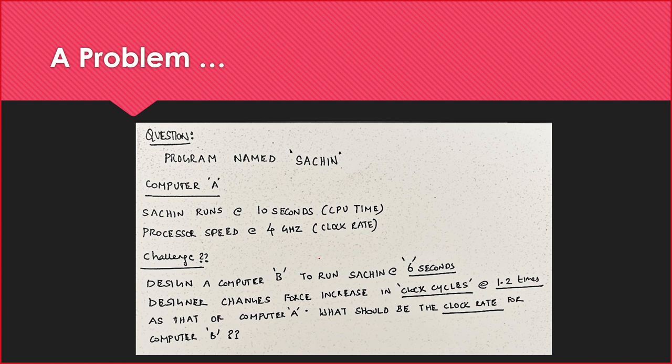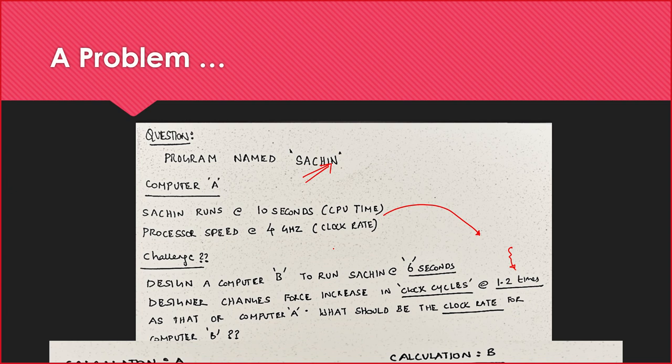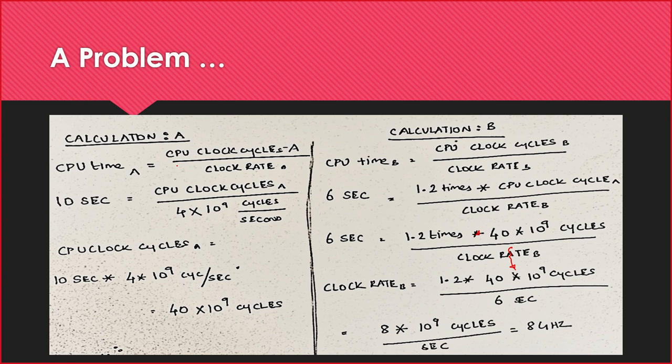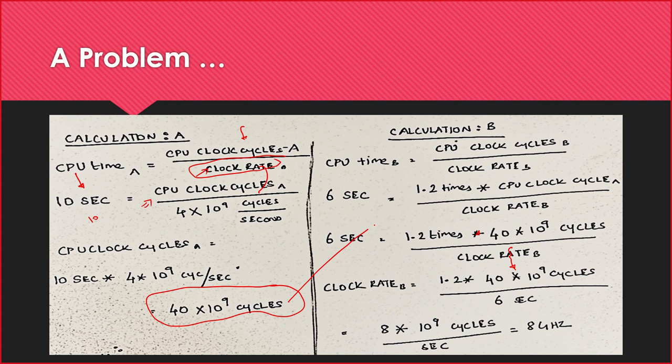I gave you a program named 'Sachin', and one of you asked why the same rules are considered when the question says it is 1.2 times more. I answered that as well. We then used the formula: CPU time = CPU clock cycles / clock rate. The CPU time was given as 10 seconds, clock cycle was unknown, and clock rate was 4 GHz, giving us 40 × 10^9. Multiplying by 1.2 gave us the calculation for B, which needed to be done in 6 seconds.